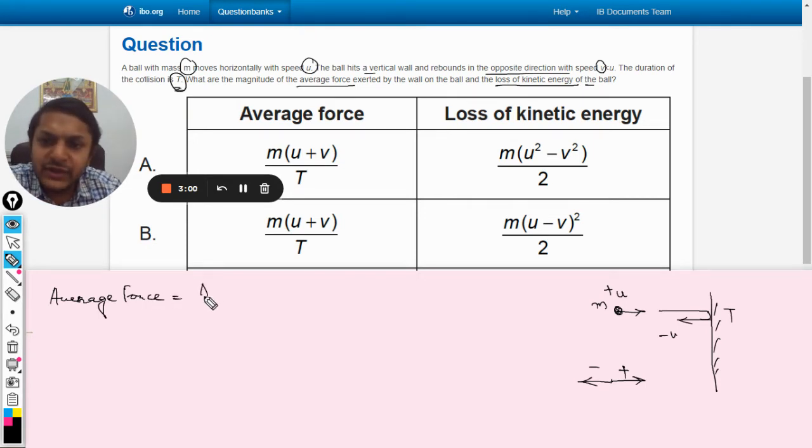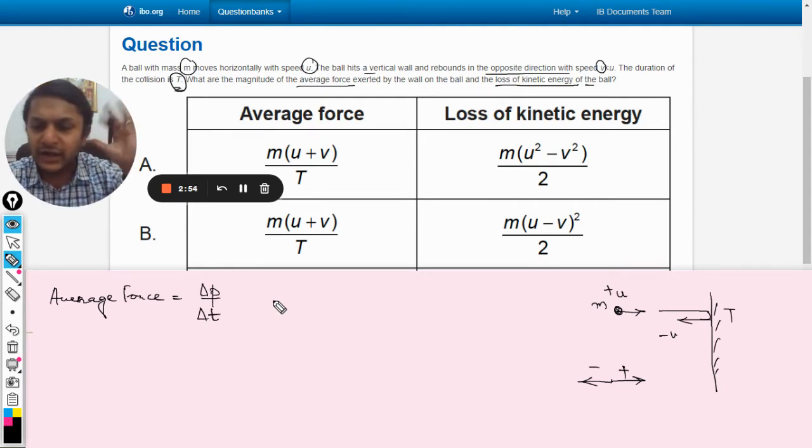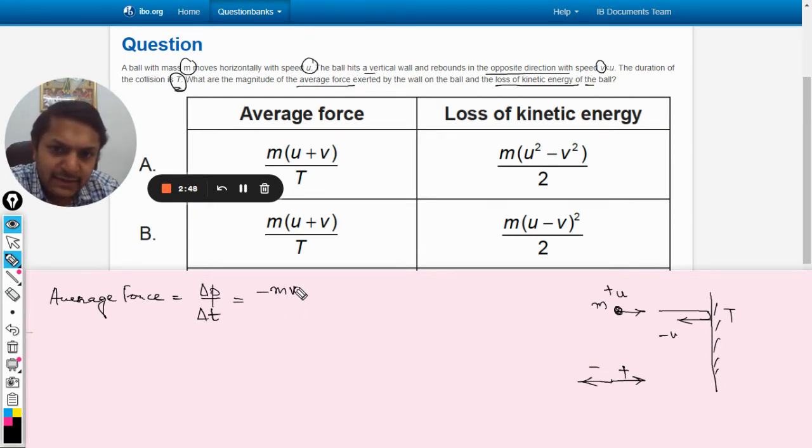Average force, as we know, as Newton has given us the formula, average force is total change in momentum by total time. So the final momentum will be minus m into v, because v is in the negative direction, minus the original momentum that was m into u, which was positive.